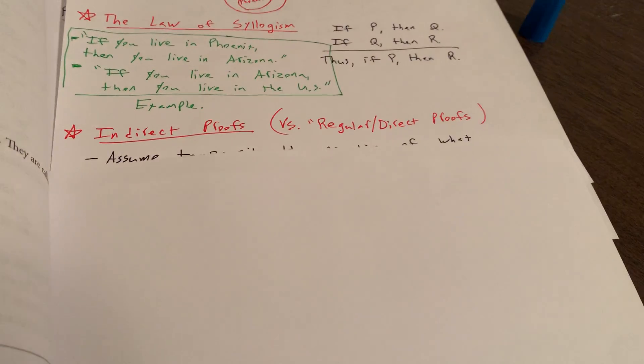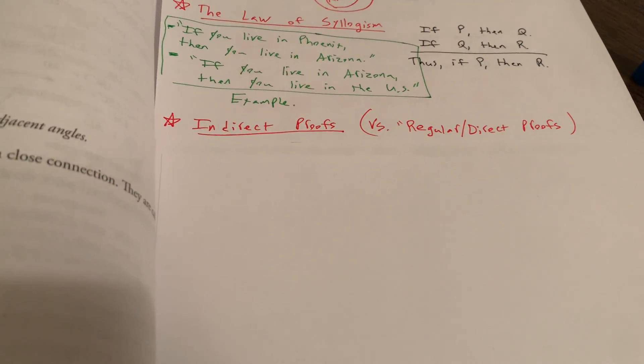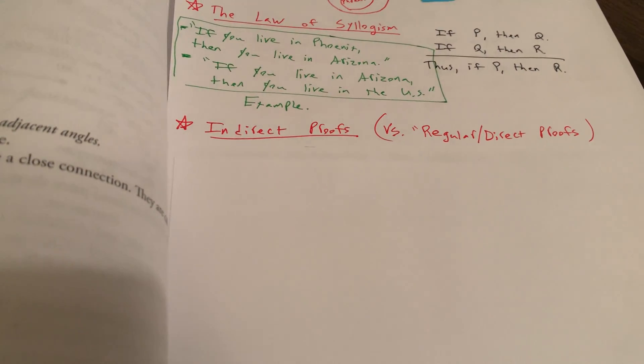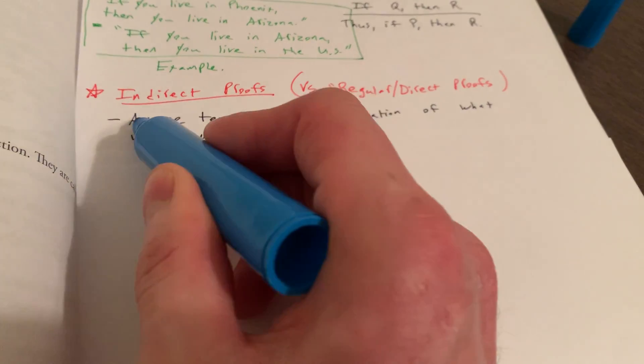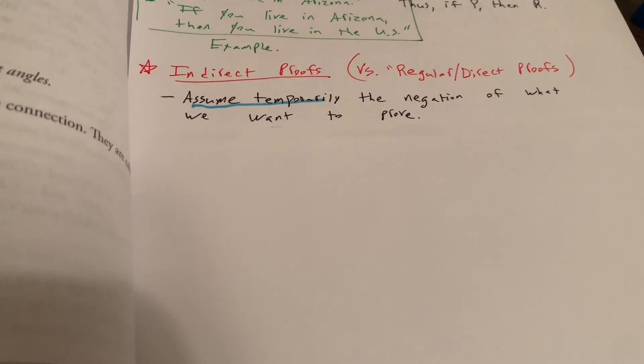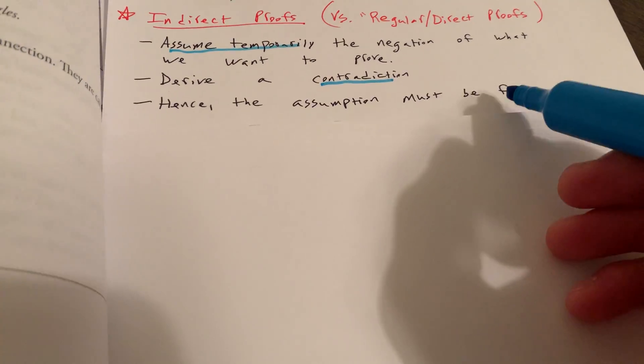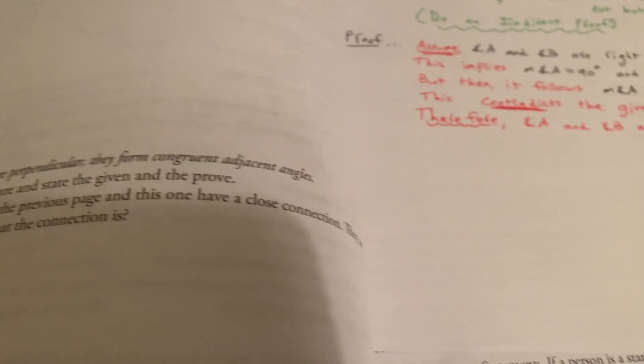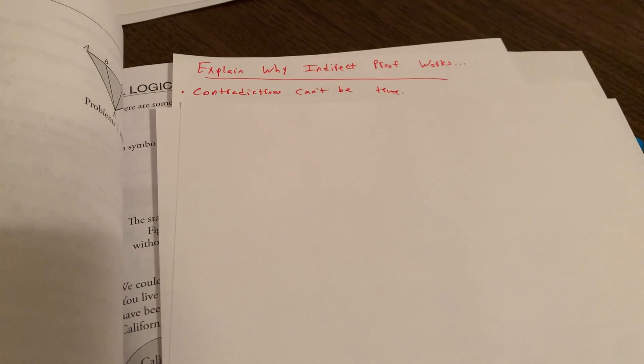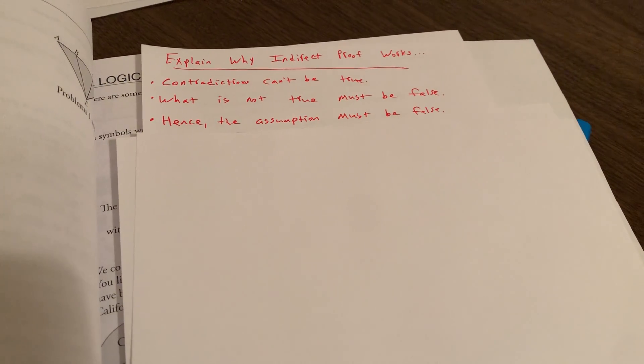And then we get into a really interesting topic called indirect proofs. Now, when I was in a high school geometry class many moons ago, I don't think we did indirect proofs. But here you get to do some of them, which is pretty cool. So an indirect proof is versus a so-called direct proof or regular proof. What we're going to do here is that we assume temporarily the negation of what we want to prove. We derive a contradiction. Hence, it must be that the assumption must be false. So that's basically the general structure of an indirect proof.